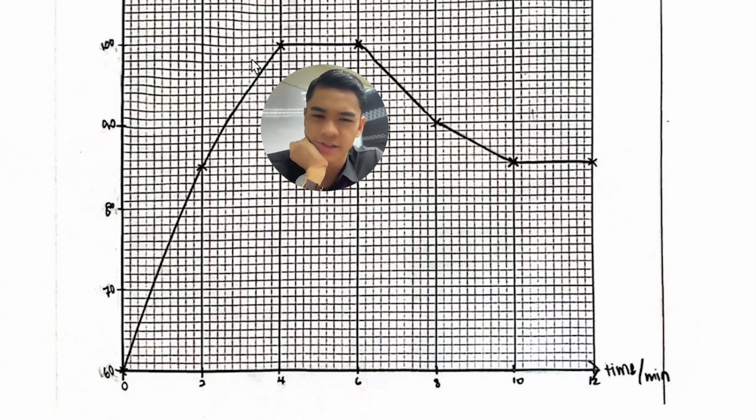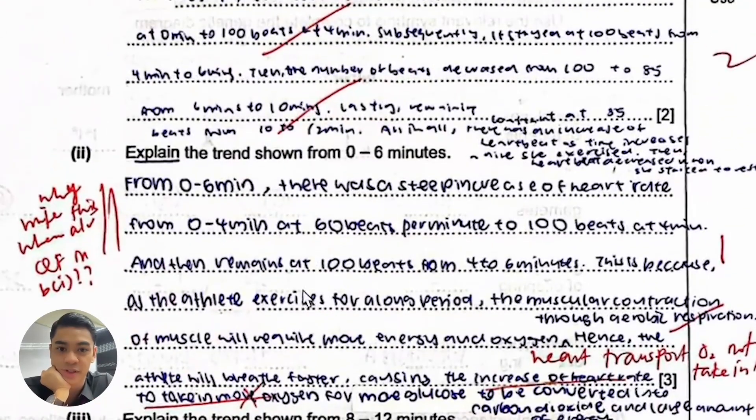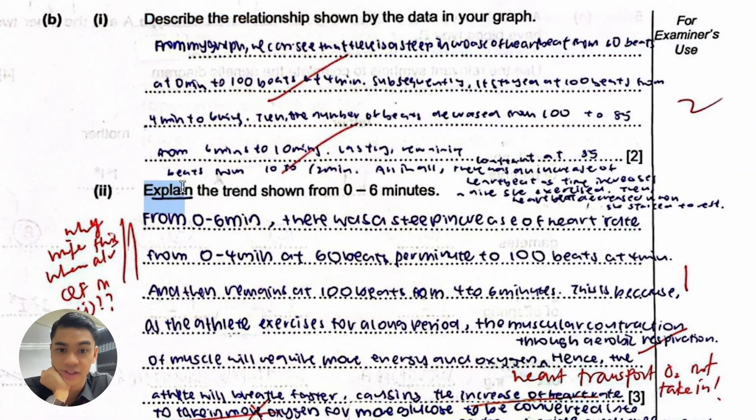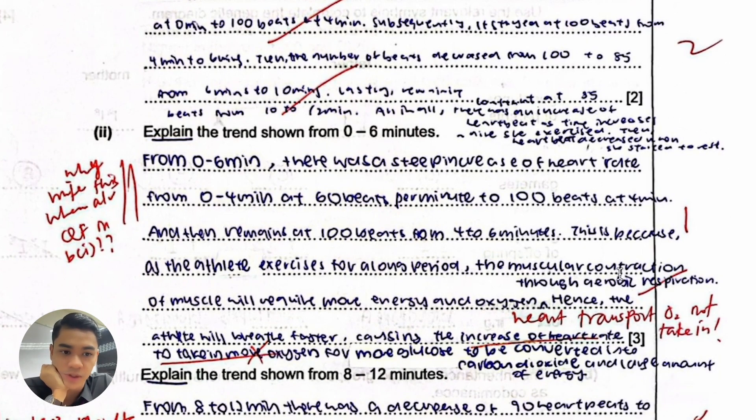Why does our heart rate need to increase during exercise? That's what the question is actually asking. Explain this trend. You already described up there so that's why the teacher said don't describe anymore, they're not giving you marks. Don't need to quote the data here because you already did it up there, so just go straight into explaining.